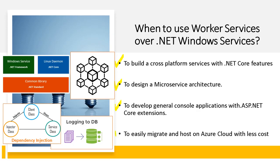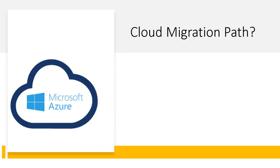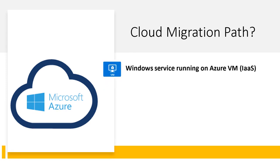Lastly, if your organization is planning cloud migration, you can easily migrate and enjoy the benefits of hosting less expensive services on a cloud platform. If you are migrating to Azure, you can simply migrate your Windows services using a lift-and-shift approach to Azure VM as an Infrastructure as a Service model. You can choose a range of operating systems for an Azure VM and run your service or executable on that VM.